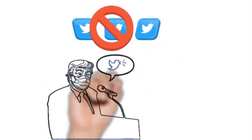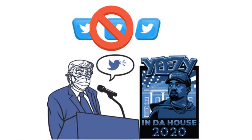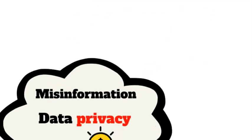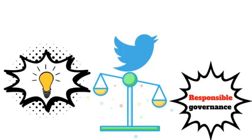Musk has reinstated a number of accounts that were previously suspended or banned by Twitter for violating the platform's rules. This has included accounts belonging to controversial figures such as Donald Trump and Kanye West. Under Musk's leadership, X implemented several policy changes to address issues like misinformation, harassment, and data privacy.